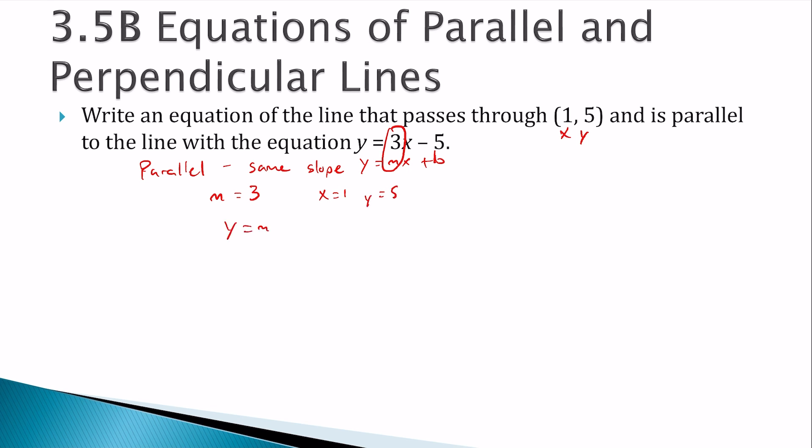So I have y equals mx plus b. y was 5, m is 3, x is 1. 3 times 1. Subtract the 3. So b is 2. So our answer, y equals mx plus b. We're going to fill in the slope and the b. So y equals 3x plus 2.